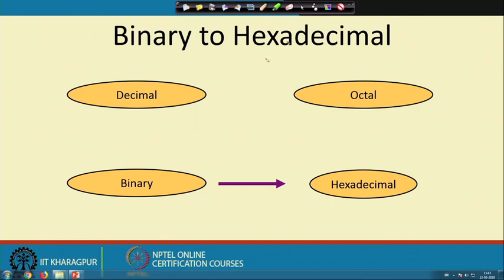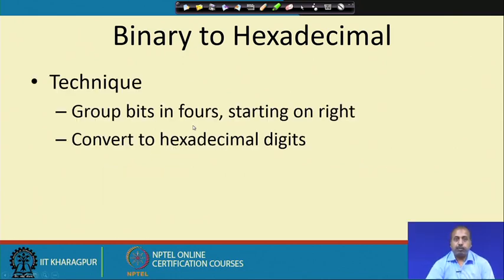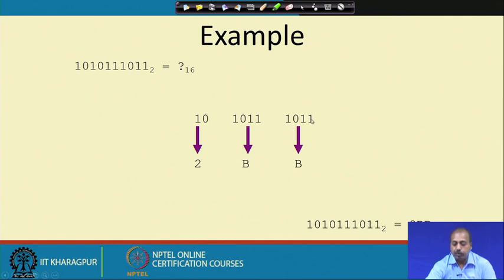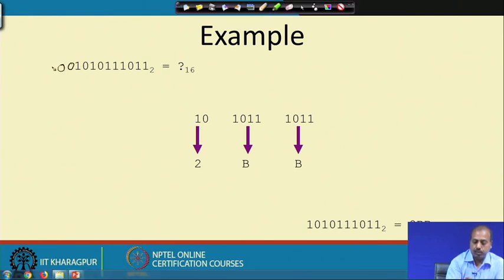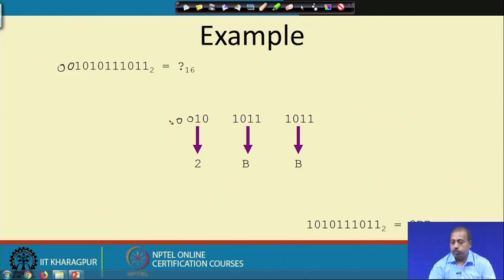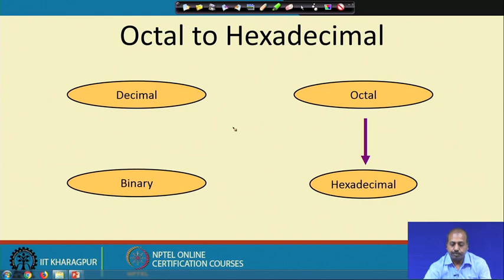For binary to hexadecimal conversion, the same approach applies, but now the grouping is done in terms of 4 bits. We group in terms of 4 bits starting from the right side, then convert those bit pattern groups to hexadecimal digits. Here, 1 1 0 1 forms the first group, 1 1 0 1 forms the next group, and we have only 2 bits left — 0 and 1. We pad with 0s to make 0 0 1 0. Ultimately the pattern becomes 2BB, which is the hexadecimal number corresponding to the binary number.